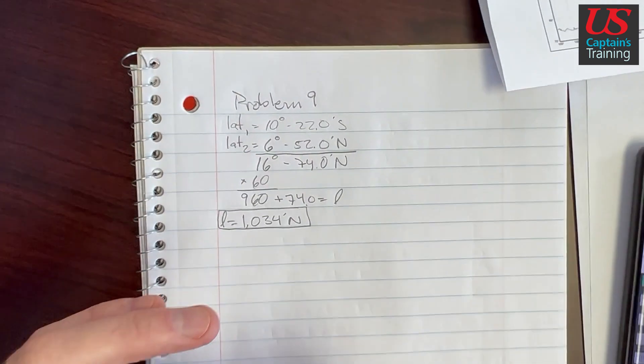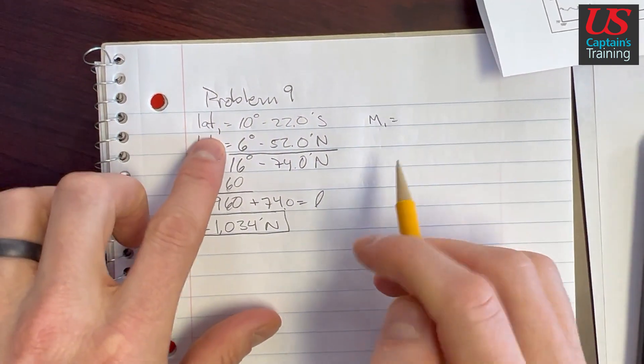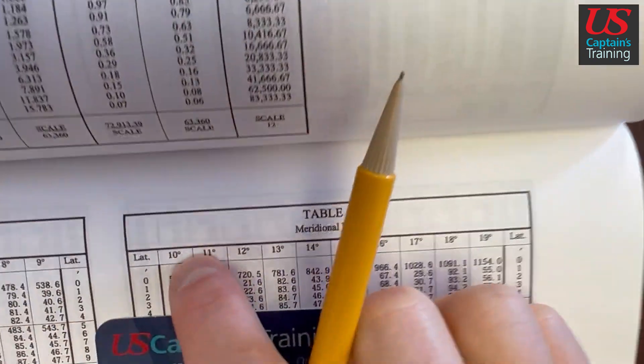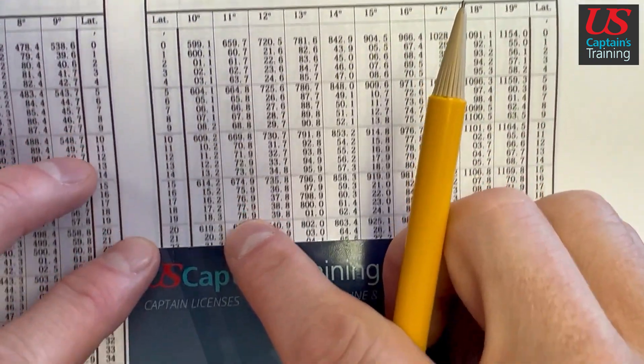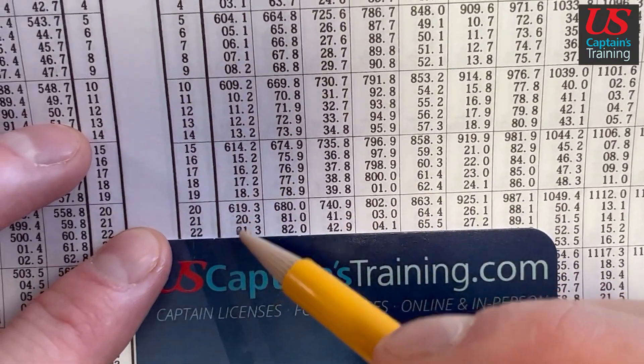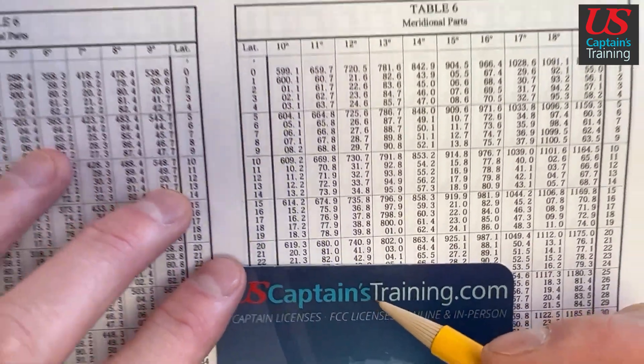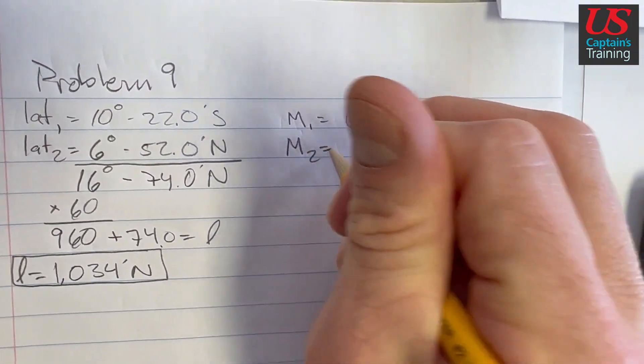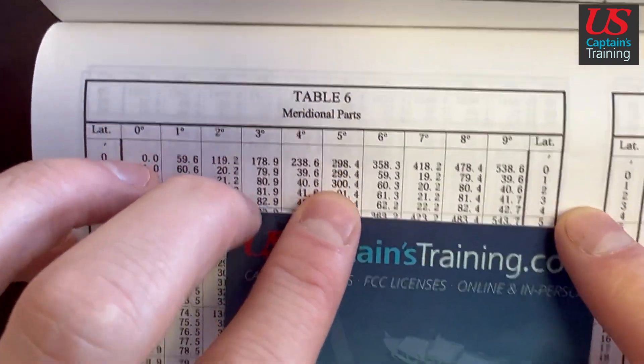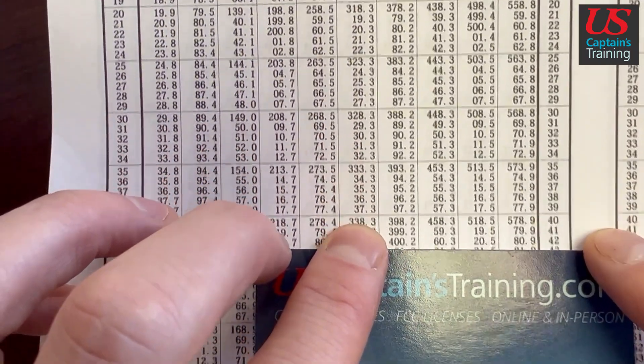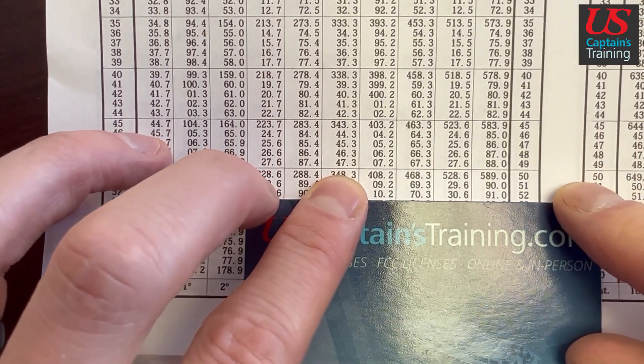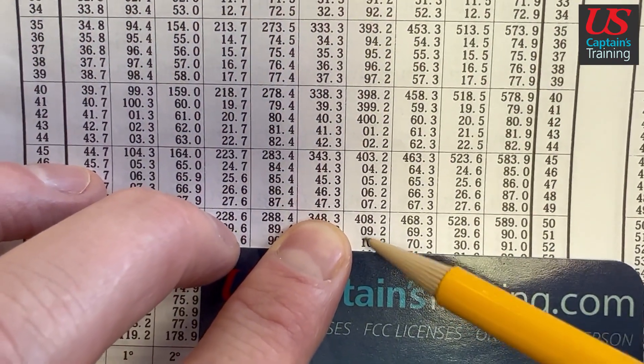Now we need to find our meridional parts. M1 is going to equal latitude 1. We're at 10 degrees 22 minutes south. So we find our 10 on top and our 22 on the side. So 10, 22, and the 6 comes down. So 621.3. And we find our M2 now, which is 6-52. So we find our 6 on top, our 52 on the side. So 6, down 2, 52. Good. 6 degrees 52. So this 4 comes down. We got 410.2.